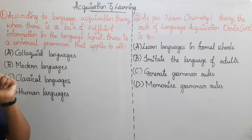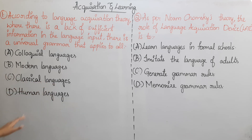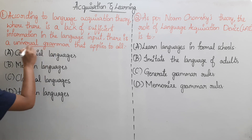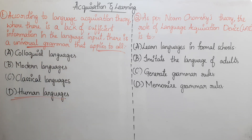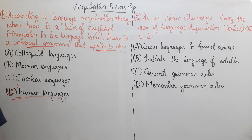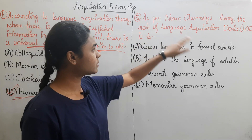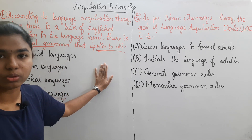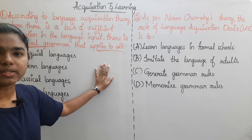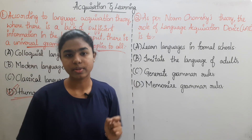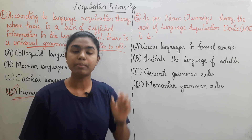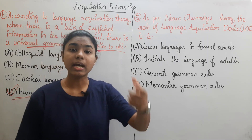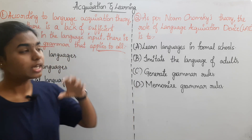If you apply the universal grammar in the language input, you can apply the language acquisition device to each human brain. We will create innate capacity and ability. That is how we do language acquisition.